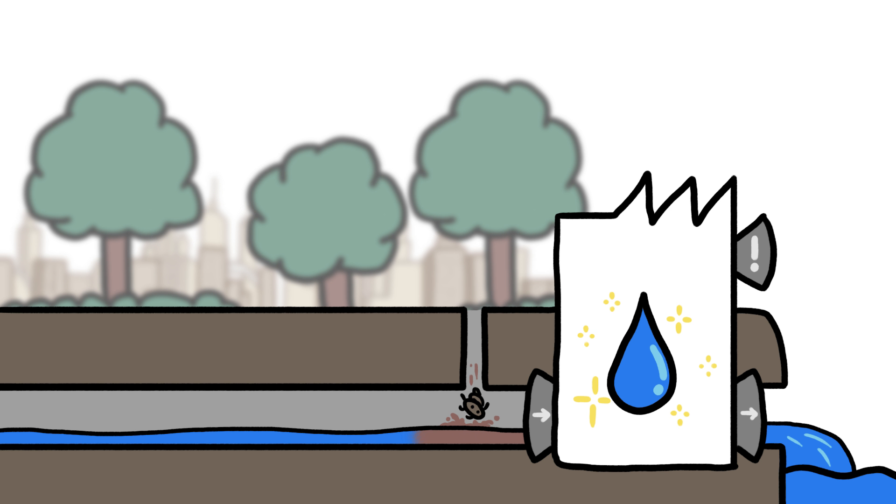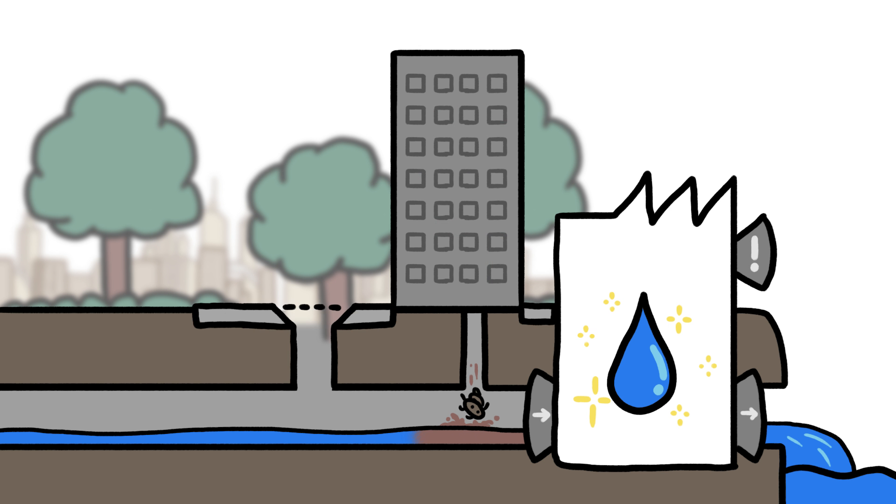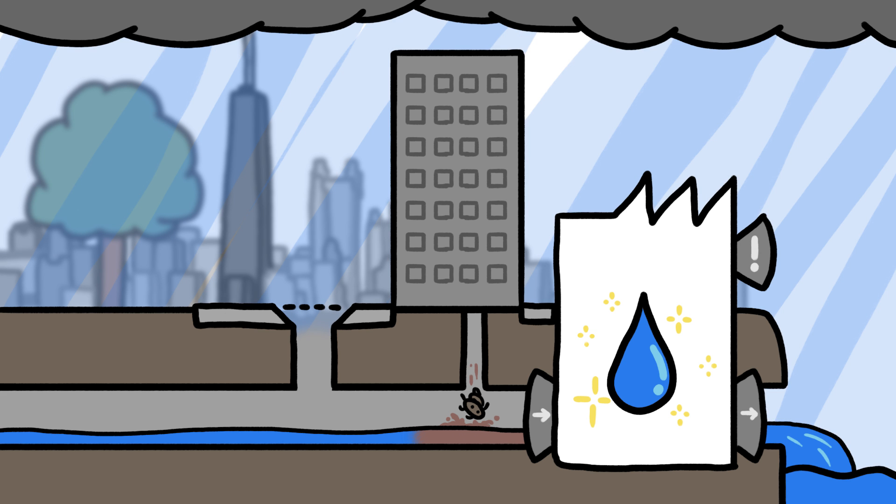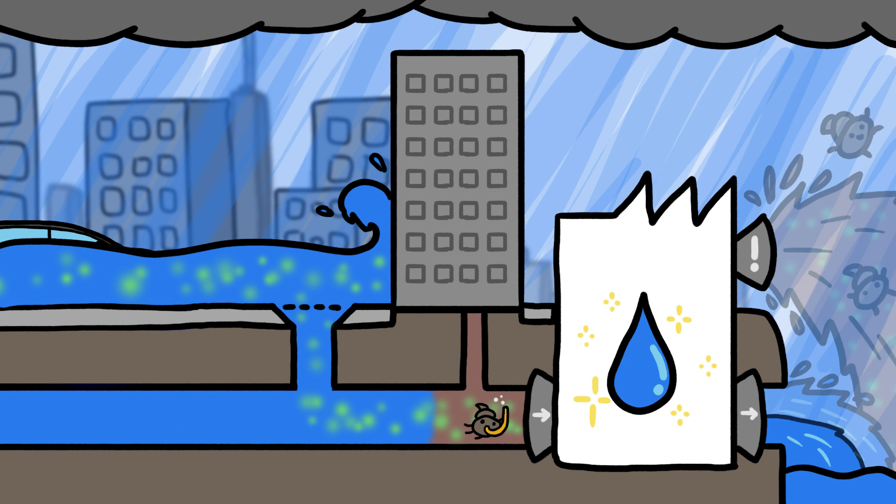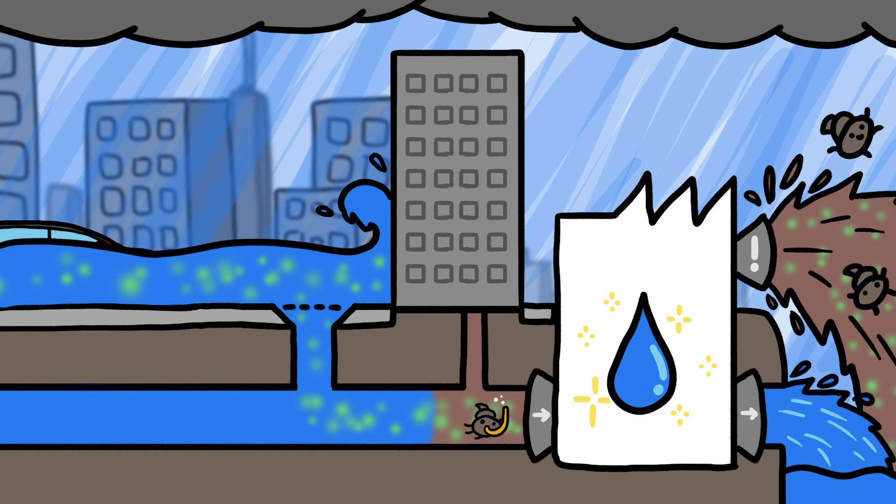And because cities have continued to build an increasingly widespread web of concrete and pavement, less of that megastorm water can soak into the ground and more of it gets funneled into the sewers. As urbanization continues and storms get worse, these combined sewer systems are overflowing more and more.